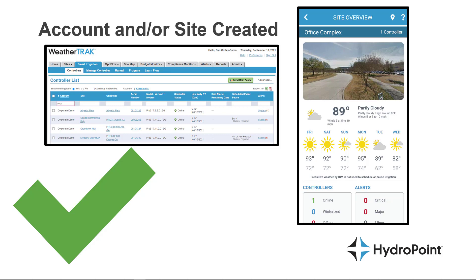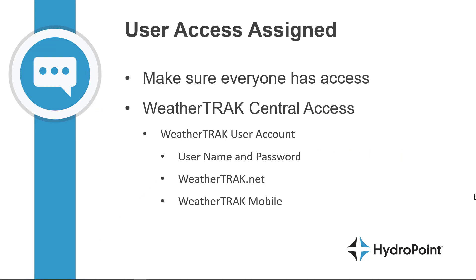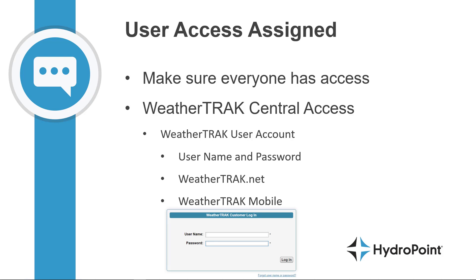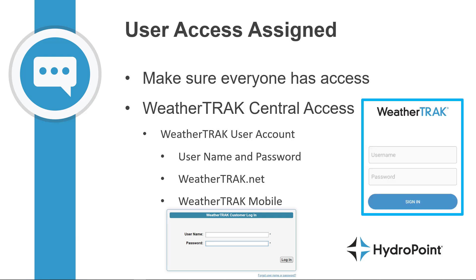We go into WeatherTrack Central and set up all of the account information and all of the site information, and then we assign the controller to that site. There is some back-end administrative work that has to happen before a WeatherTrack controller can be seen online. Once the activation brings that controller online, it can then be seen and managed from both WeatherTrack.net and WeatherTrack Mobile.